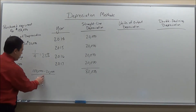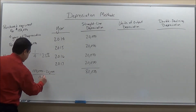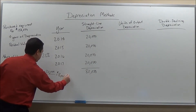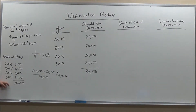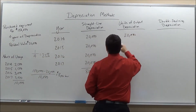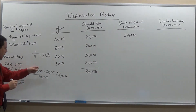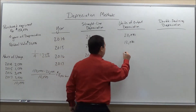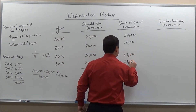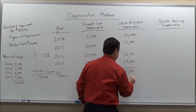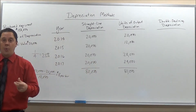We have $80,000 divided by 10,000 hours, which gives us $8 per hour. We then multiply $8 against each year's hours: $8 times 2,500 gives $20,000; times 1,500 gives $12,000; times 3,000 gives $24,000, and the same for the last year. Adding those up — 48 plus 12 plus 20 — gives us $80,000 total depreciation. They equal the same thing; it's just how we're depreciating.